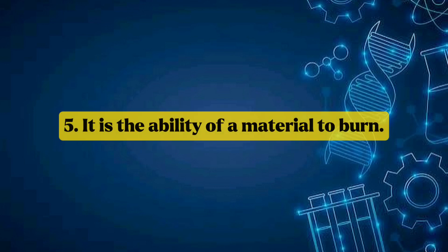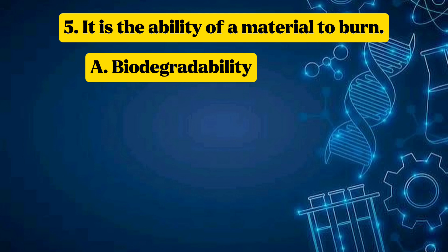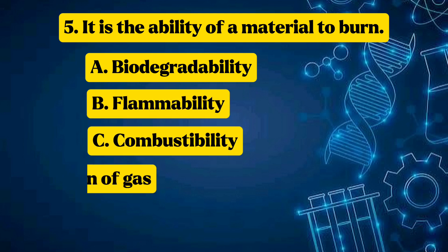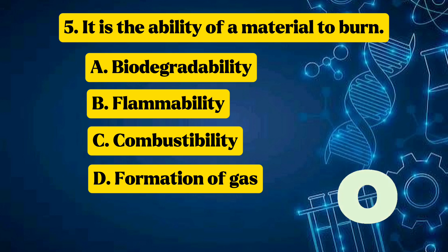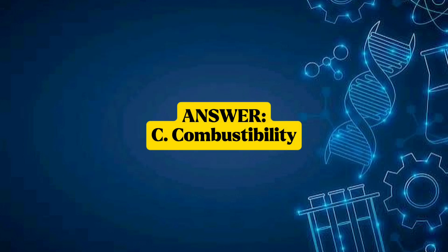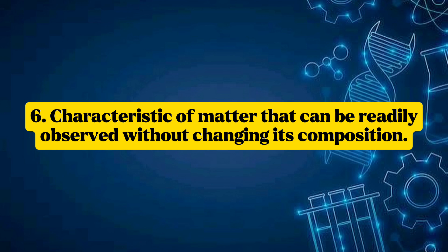Question 5: It is the ability of a material to burn. Options: A — biodegradability, B — flammability, C — combustibility, D — formation of gas. Answer: C — Combustibility. Question 6: Characteristic of matter that can be readily observed without changing its composition. Answer: B — Physical property.